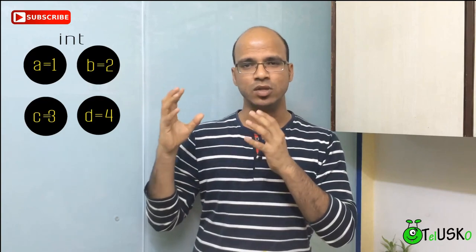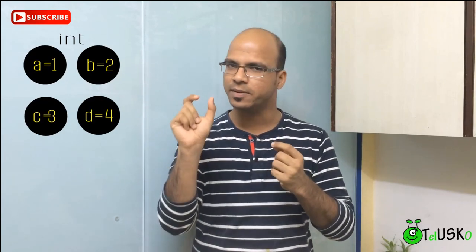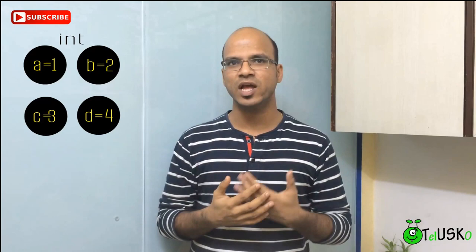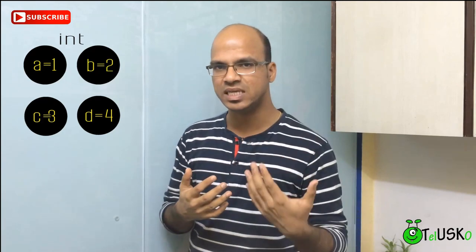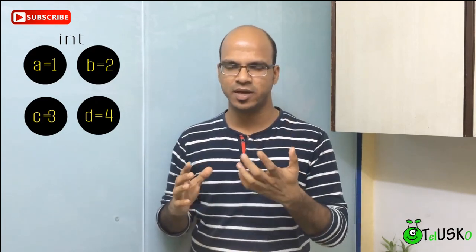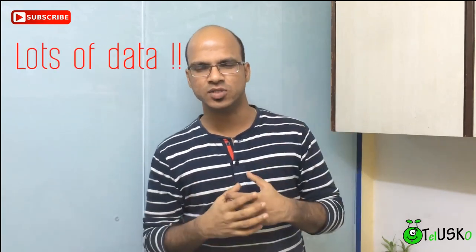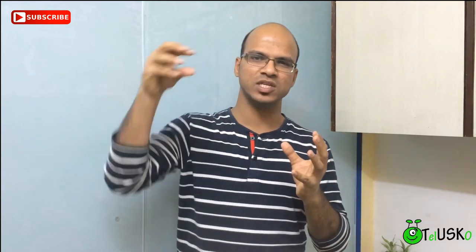Since we have these four variables, to use them we can use the variable name. For example, to access the value of c, you can say System.out.println(c). But what if you want a thousand variables — you want to maintain lots of data? Instead of taking those thousand variables, what if you could just create one big variable to hold all these values? Is it possible?